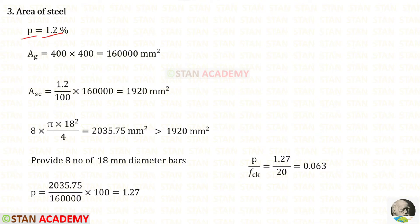Using that, we can find the area of the steel. Let us find the gross area. When we multiply the side with the side, we will get the gross area. 1.2 upon 100 into gross area, we will get the area of the steel. Then we can use trial and error method. I have used 8 numbers of 18 millimeter diameter bars. When we do that, I am getting an area approximately equal to this area.